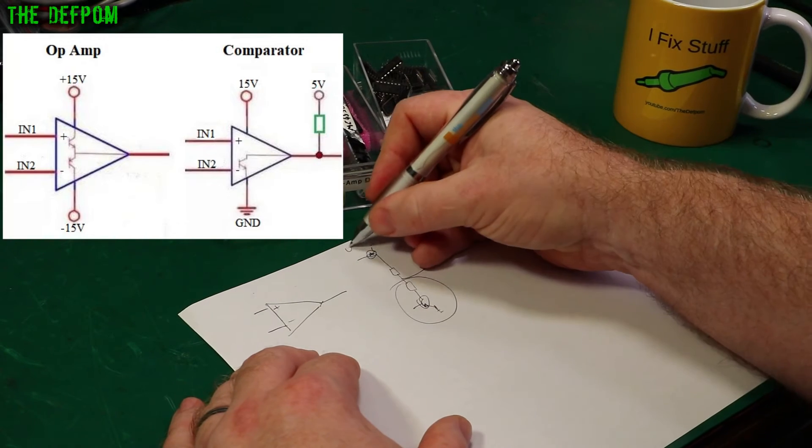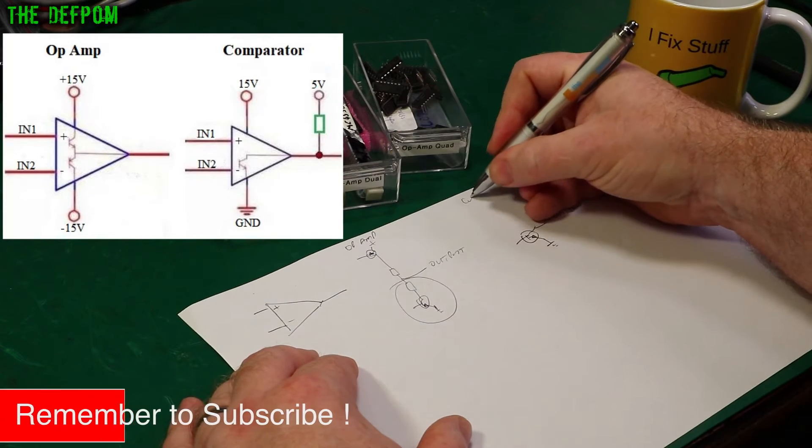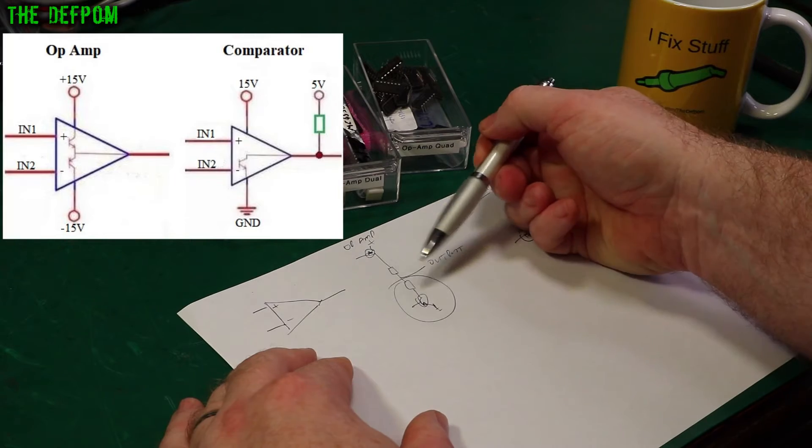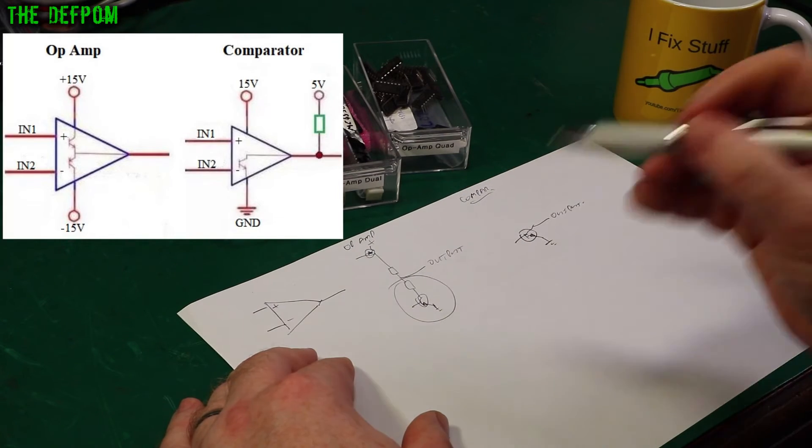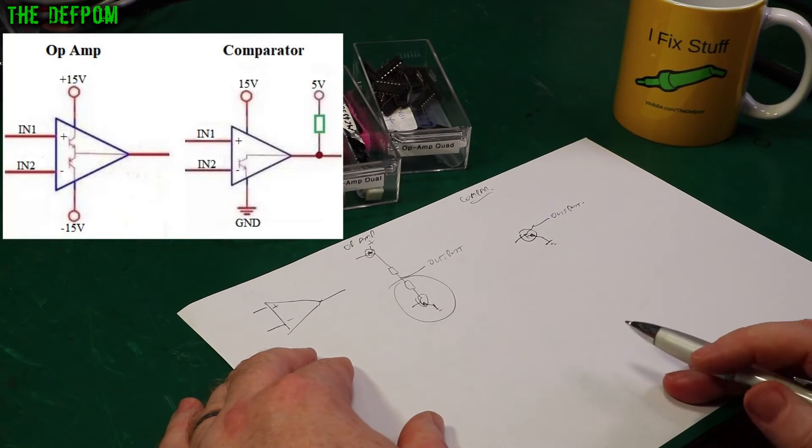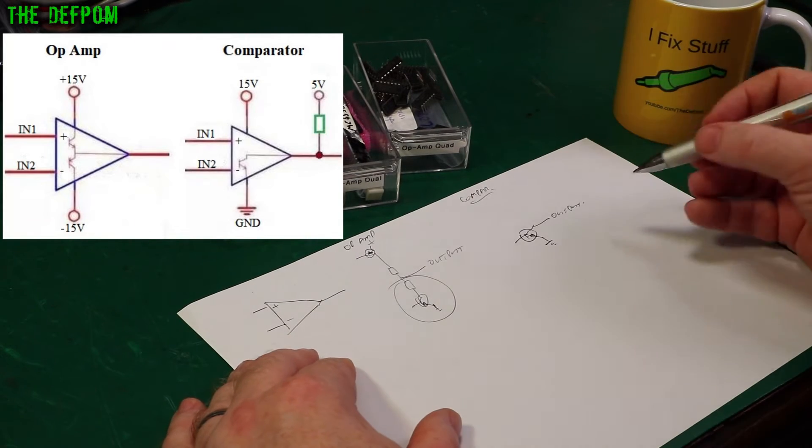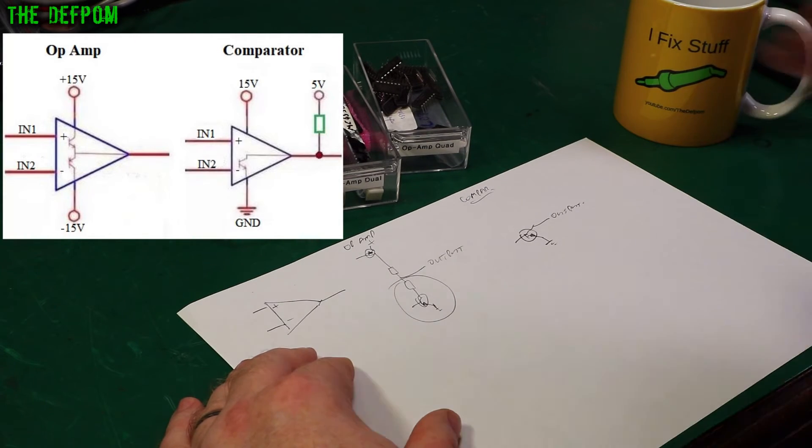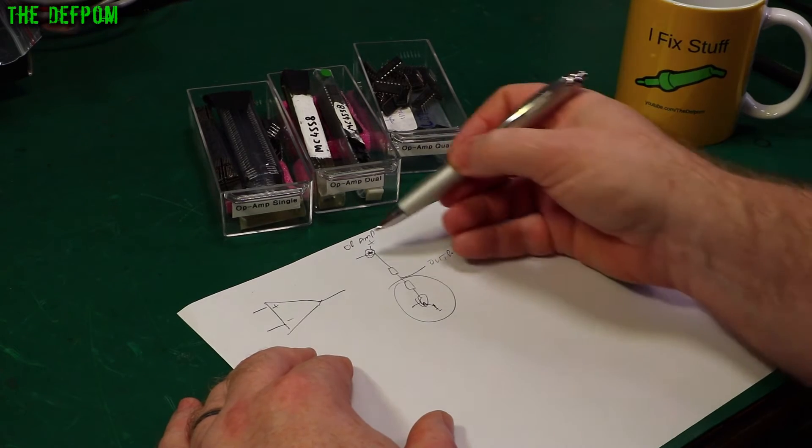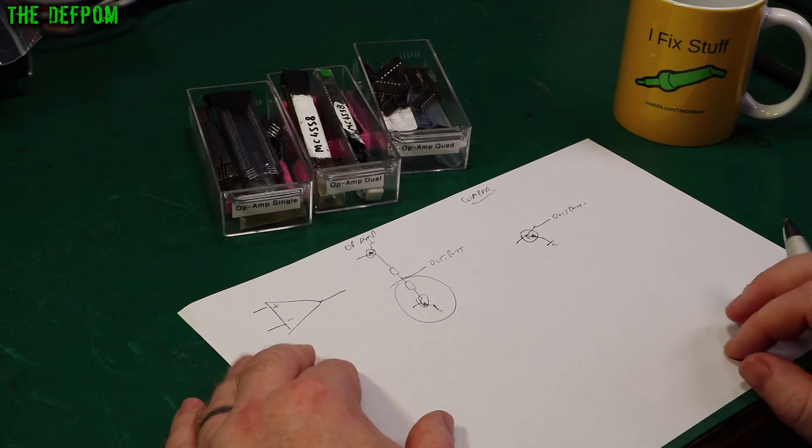This is an op-amp. That's a comparator. This is an important difference. An op-amp is designed to amplify in a linear fashion very precisely in a calculable way so you know exactly what amplification level is. A comparator is a switch - it's on or it's off and they're designed to work in a saturated method. This is meant to work in a linear method.